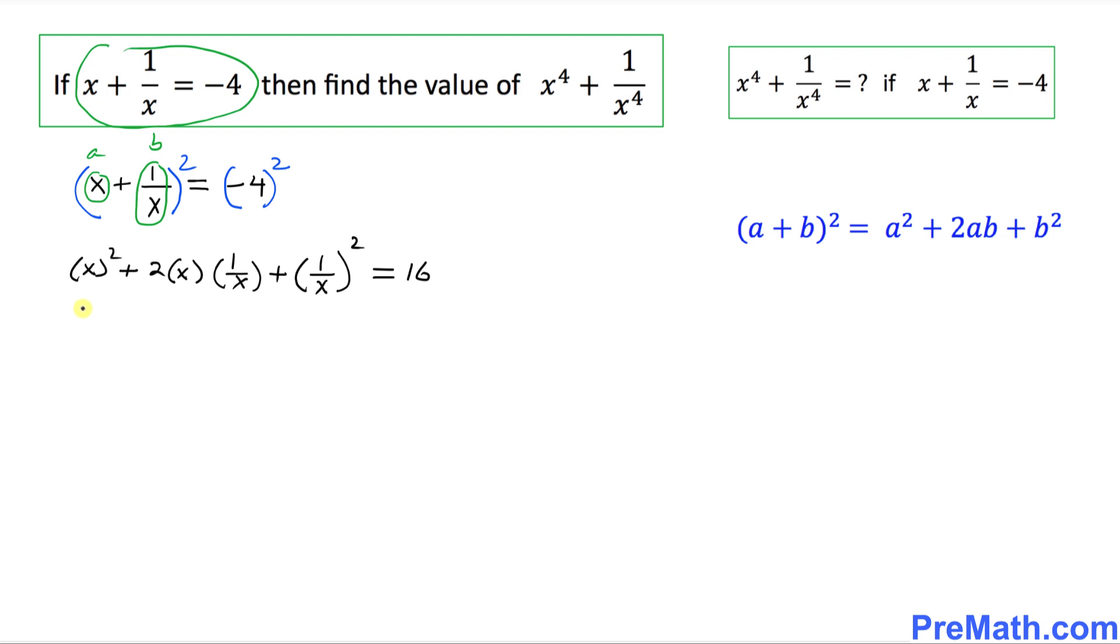Let's simplify. That's going to give us x square, and this x and 1 over x they cancel each other out, we got simply plus 2, and that quantity is going to give us 1 over x square equal to 16. In the next step I want you to move this 2 on the other side. So on the left hand side we are going to have x square plus 1 over x square equals to 16, and when you drag this 2 on the other side it becomes negative 2. So we ended up with x square plus 1 over x square equals to 14.